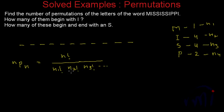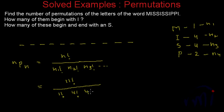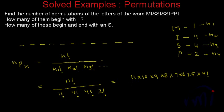To find the number of permutations of the letters of Mississippi, it will be 11 factorial — because we have 11 letters and 11 places — divided by n1 factorial, which is the repetitions of M, that is 1 factorial, divided by n2 factorial, which is the repetitions of I repeated 4 times, so divided by 4 factorial, divided by 4 factorial for S, and divided by 2 factorial for P. Since 1 factorial is 1, we can omit it.